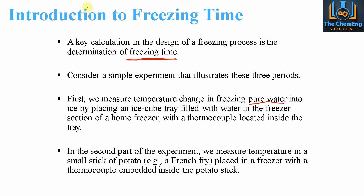The second part of the experiment is to measure the temperature in a small stick of potato — usually in the form of french fries. We place this in the freezer under the same conditions and measure the temperature at which the stick of potato turns into a solid phase.